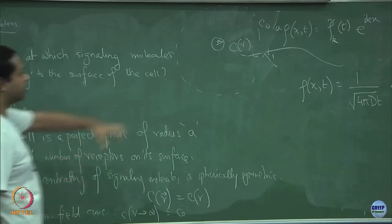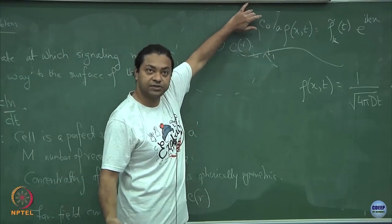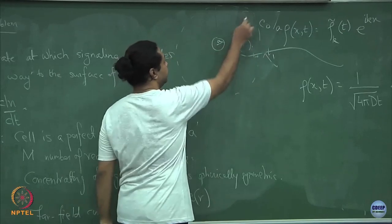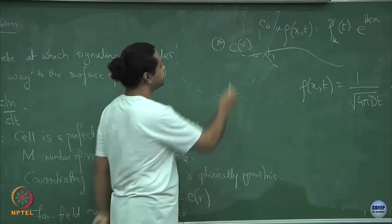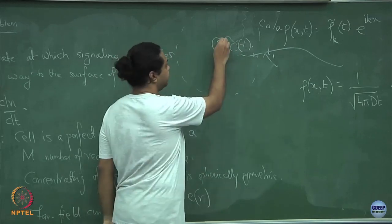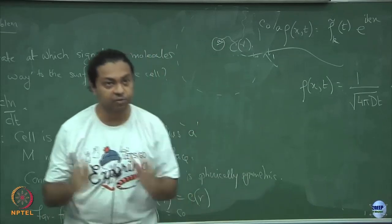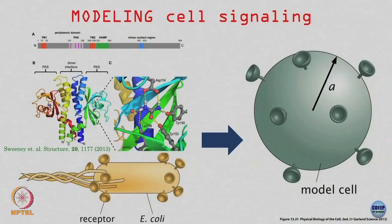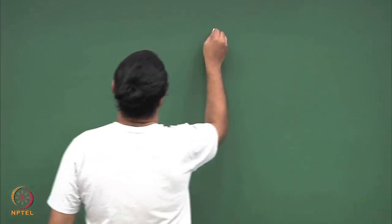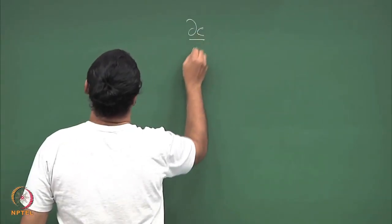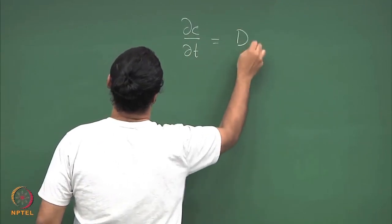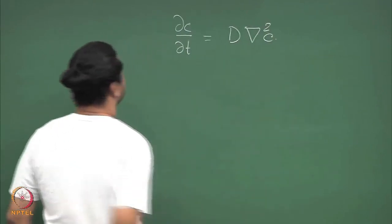The signaling molecules are maintained at constant concentration far away and diffuse through space — performing a random walk — until they hit the surface of the cell. At the surface, the receptors absorb the signaling molecule and respond. Because they are diffusing, I will solve the diffusion equation: ∂c/∂t = D∇²c.